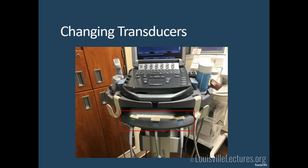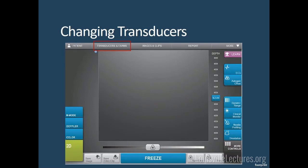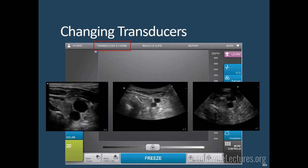Knowing how to change transducers is important. On old machines, you use the module underneath to click and change probes. On the newer machine, there's a 'transducers and exams' tab on the touchscreen that gives you all probes with images — easy to switch through. When you switch probes, the footprint and image change significantly. I use the footprint to know which probe is selected even if I haven't checked the screen.